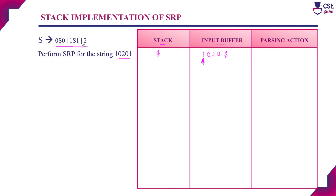The parsing technique implements frequently the shift and reduce operations until it derives the start symbol of the grammar. When the stack derives the start symbol of the grammar and the input buffer is also empty — that is the input buffer contains only the dollar symbol — we can accept the given input string. Otherwise there may be an error in the given input string and the parser will call the corresponding error recovery routine.